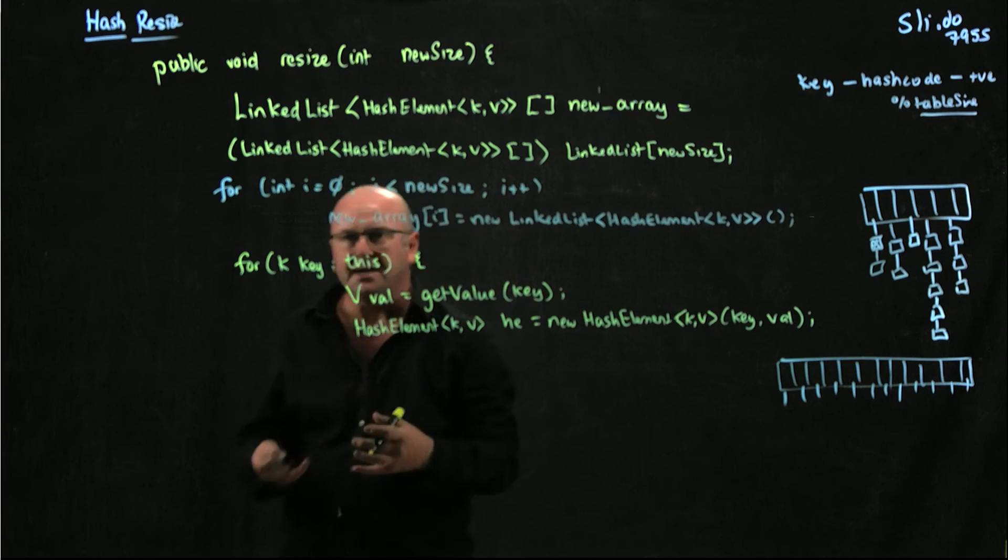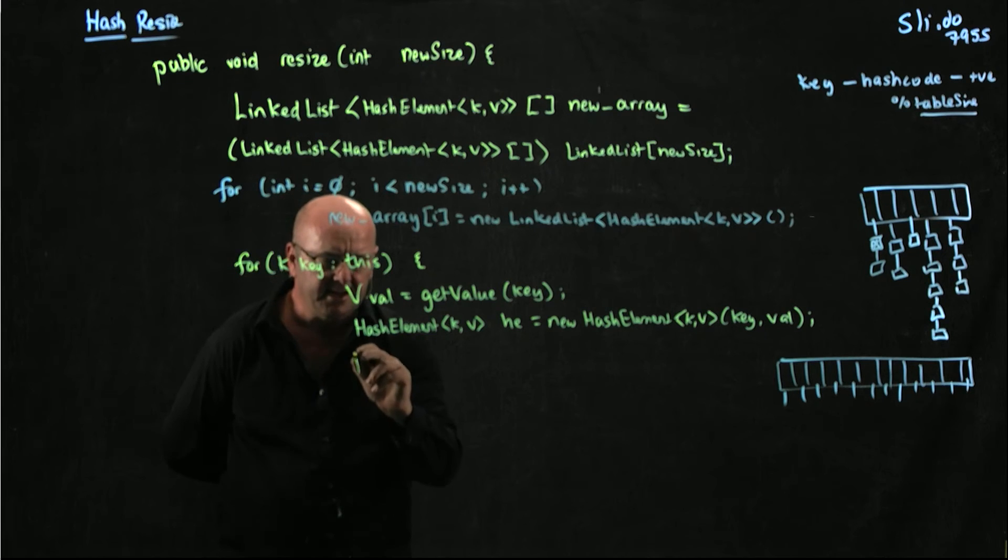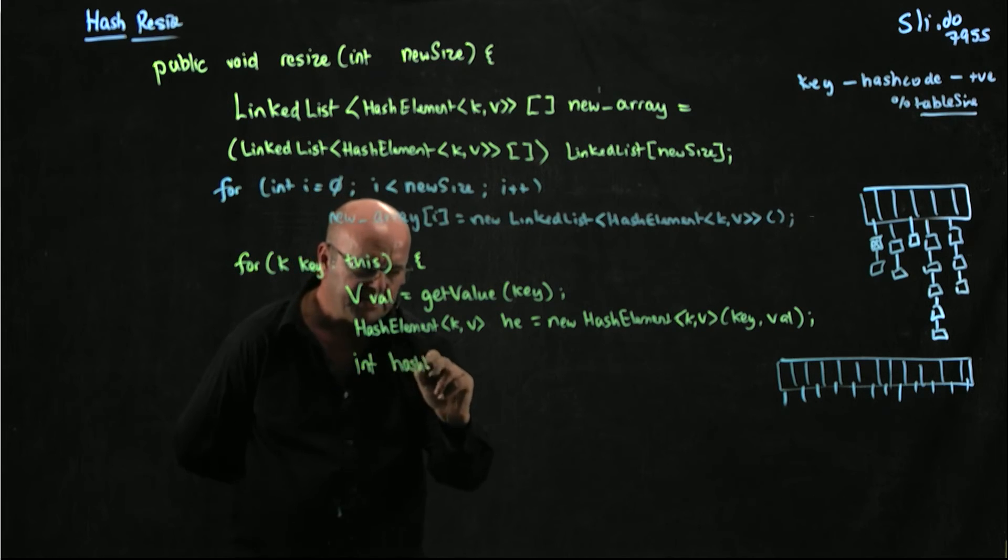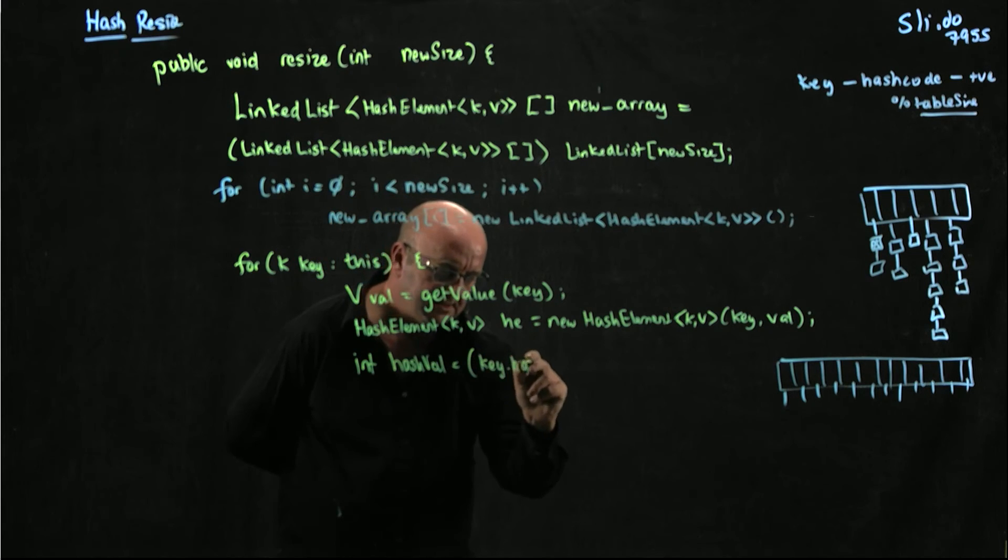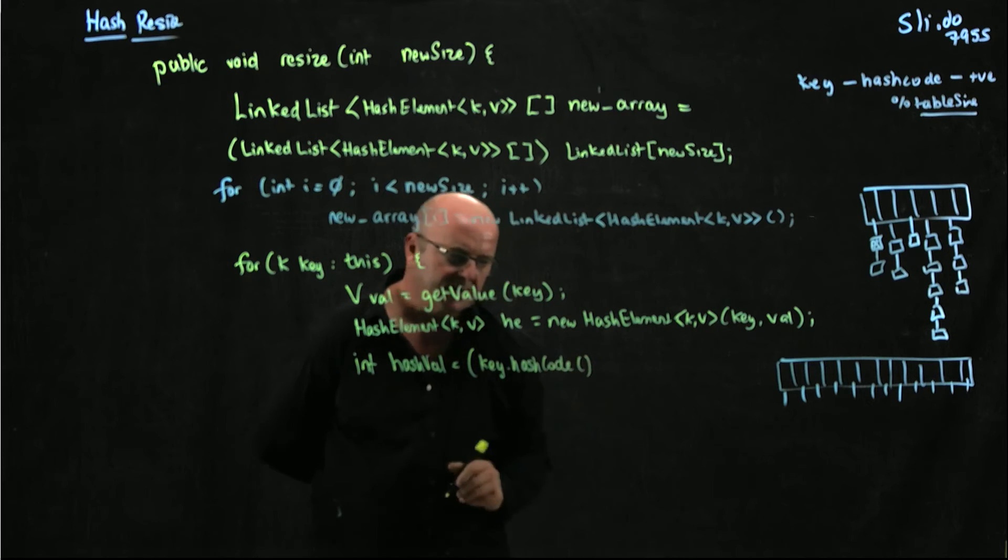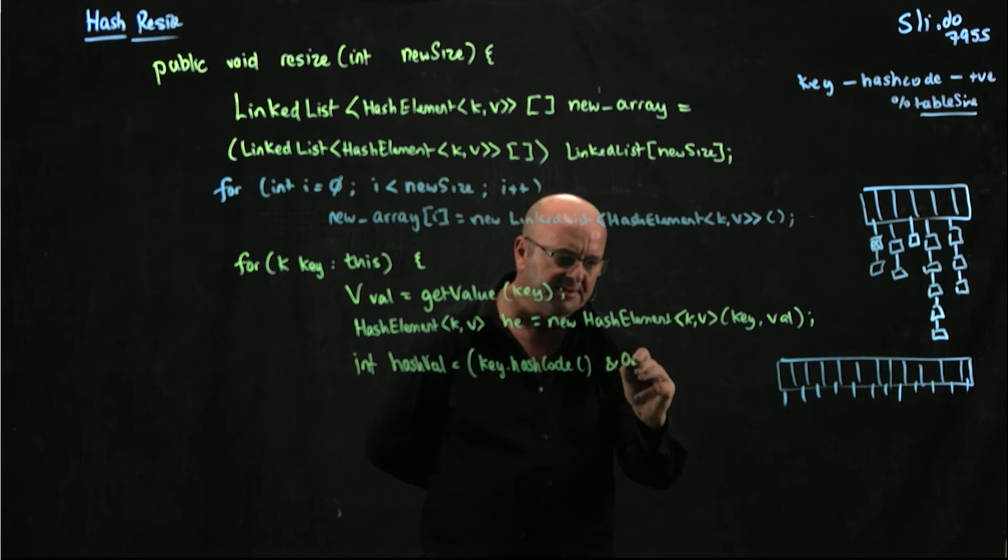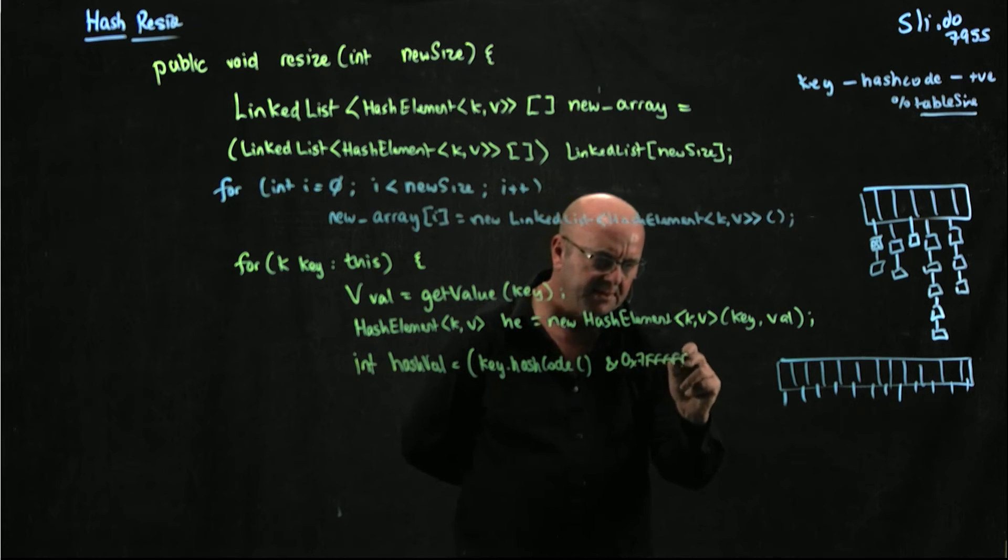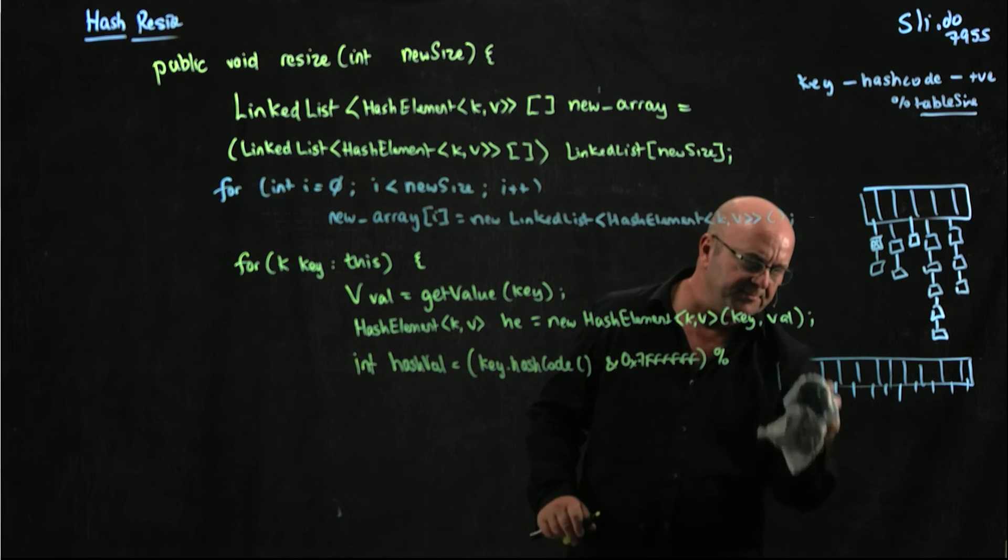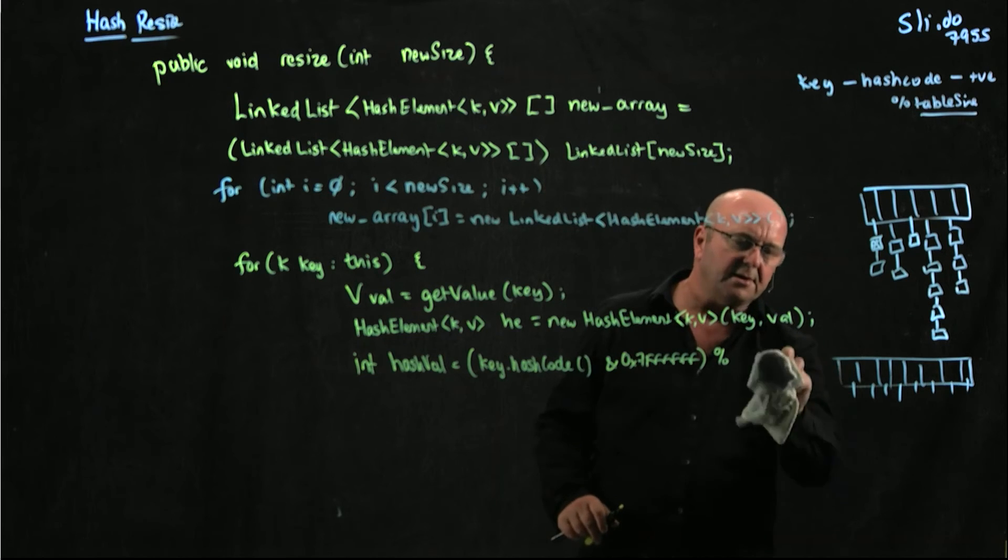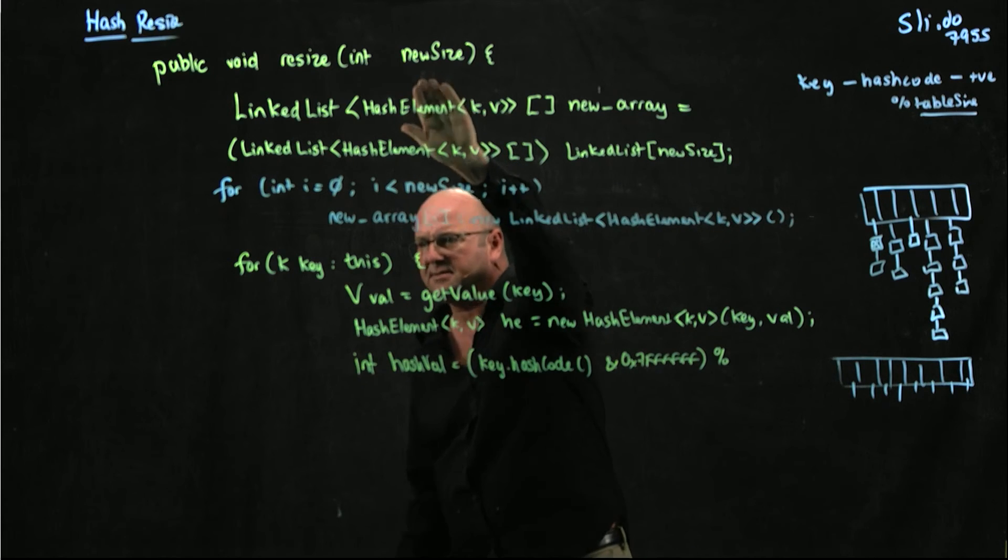We've already seen the add method for a hash, and it's basically the same as that. So we're going to say int hashval is key dot hash code. We get the hash code, we make it positive, and then we mod it. Here we have to mod it not on table size, which is the size of our old table, but we mod it on new size, the size of our new table.